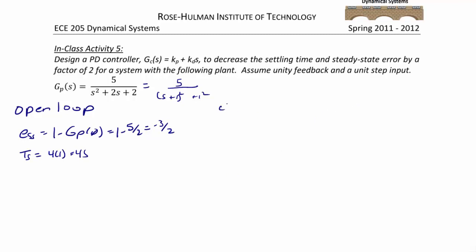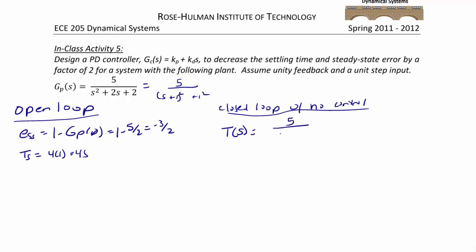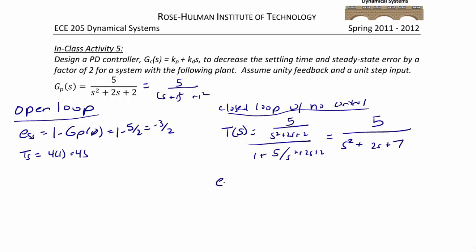What if we have a closed loop system with no controller? T(S) equals 5 over S squared plus 2S plus 2, divided by 1 plus 5 over S squared plus 2S plus 2, which simplifies to 5 over S squared plus 2S plus 7. The steady state error equals 1 minus T(0), which equals 1 minus 5 sevenths or 2 over 7. The settling time is again 4 seconds. So the settling time is about the same, but the steady state error did improve by adding unity feedback.